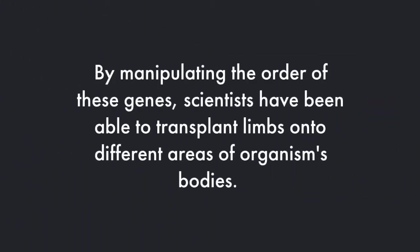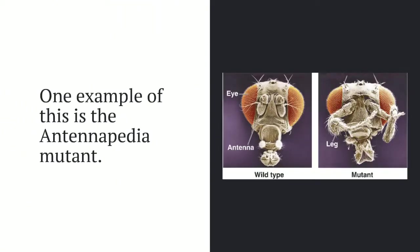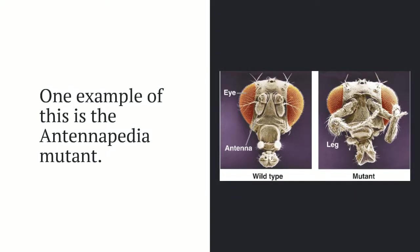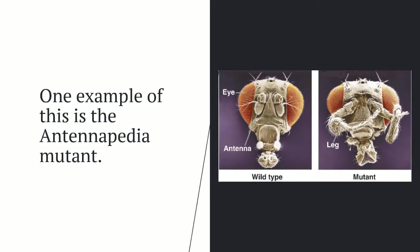In some recent experiments, scientists have been able to manipulate these genes in order to transplant limbs to different areas of organisms' bodies to make some pretty interesting results. For example, here we can see the Antennapedia mutant, which is a fly where they actually switched the order of the antennae and the legs, transplanting legs onto where the antennae should be. It's really interesting to see how big a role Hox genes play — just switching one gene can have such a dramatic effect.